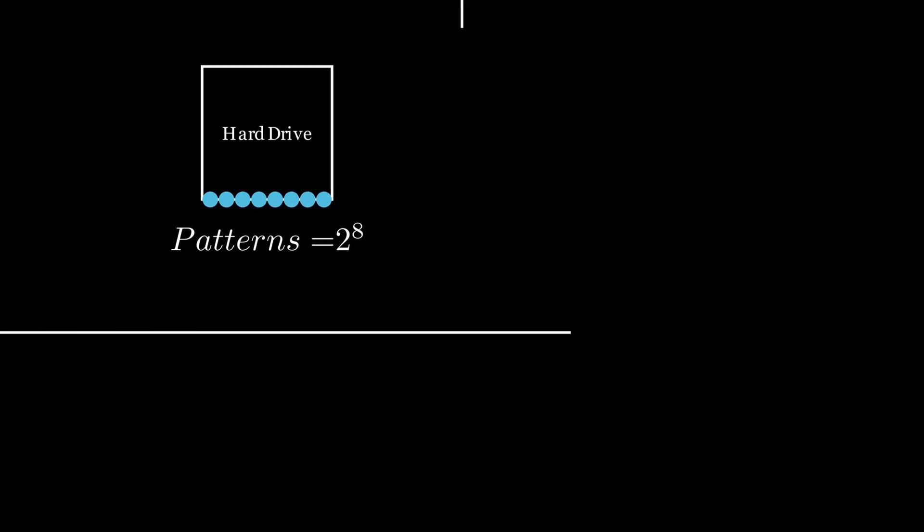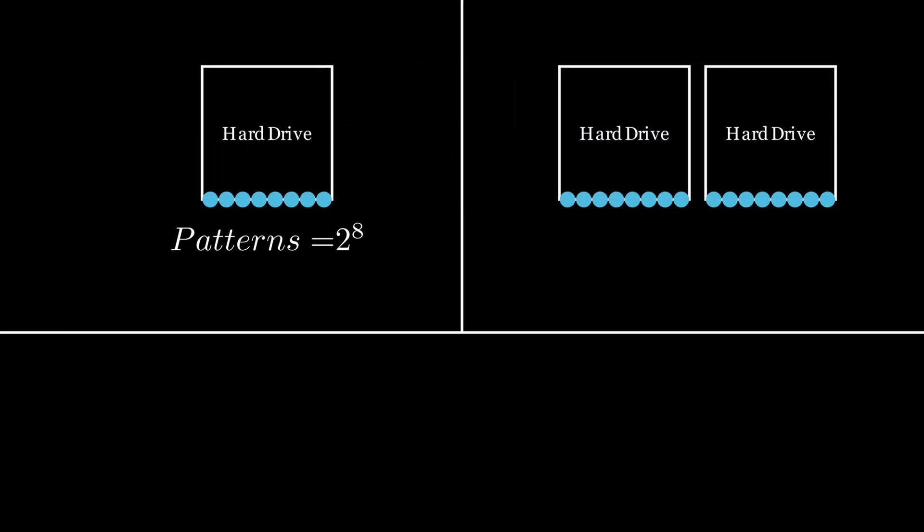To test how your measure behaves, you imagine that you somehow managed to save some money and get another hard drive that can store an additional 8 binary digits of information.